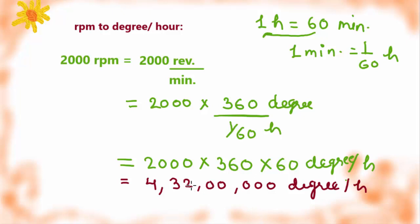1, 2, 3, 4, 5, 6, 7. That will give us 4.32 times 10 raised to the power 7 degrees per hour. I hope you understand this concept. If you have any question, you can ask in the comment box. If you like this video, please subscribe and click on bell icon. Thank you.